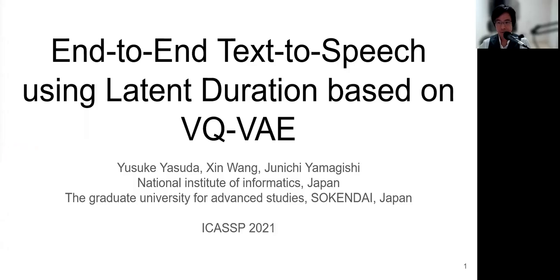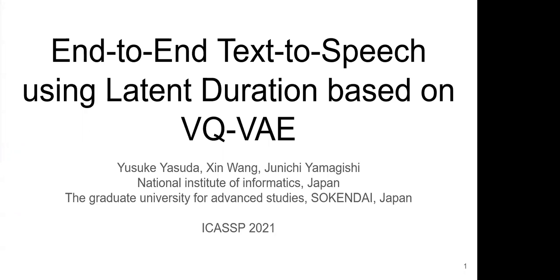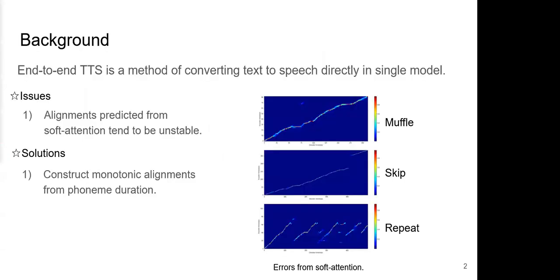Hello, I am Yusuke Asuda from National Institute of Informatics Japan. Our paper is about N2 and TTS. N2 and TTS is a method of converting text to speech directly in a single model. N2 and TTS can generate highly natural speech, but its alignments still tend to be unstable due to soft attention.